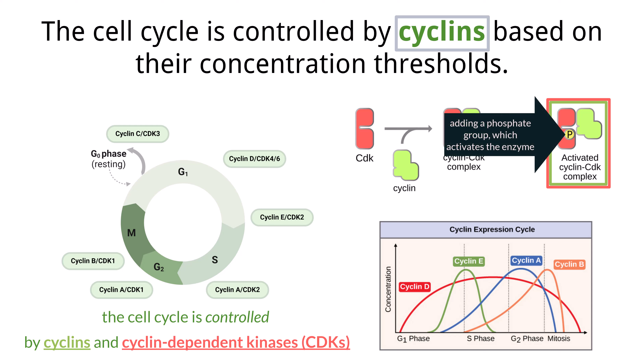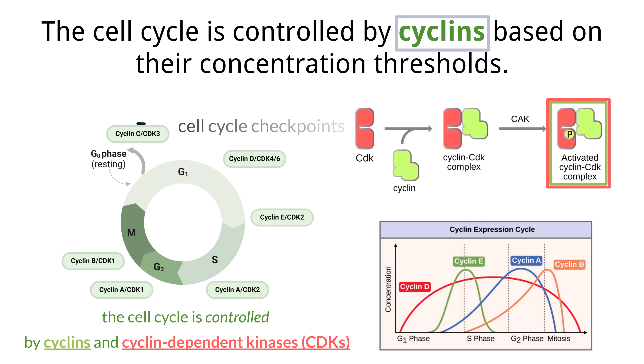Remember that phosphorylation is when a phosphate group is attached to another molecule. Frequently, that molecule is an enzyme, which causes it to be activated. It is these activated enzymes that control the cell cycle and the movement of the cell through the different phases. There are checkpoints during the cell cycle where these CDKs function.